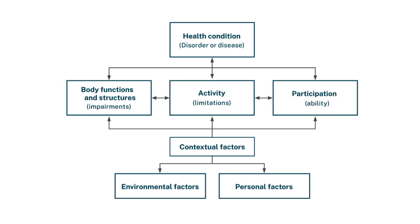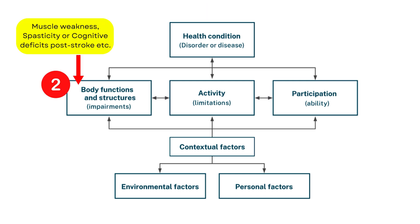After understanding the key components, we put these into a chart format. The first step in application is to note down the patient's diagnosis or health condition. The second step is to document structural and functional impairments — for example, a stroke patient might have spasticity, which you would note here.